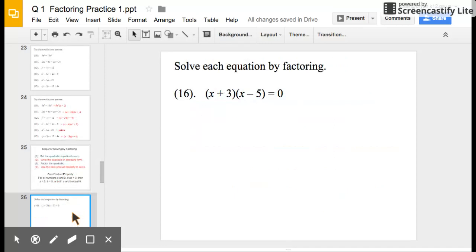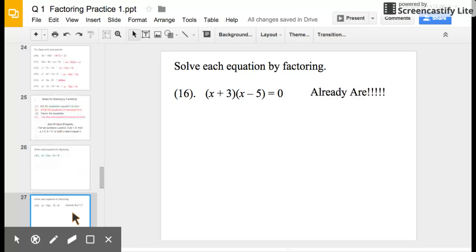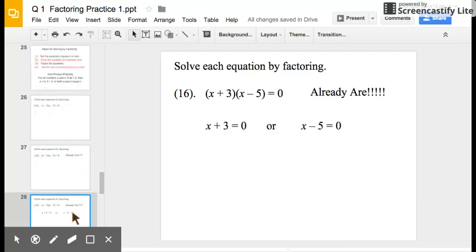So right now, I want to solve each of these equations by factoring. Number 16 says, I have x plus 3 times x minus 5 equals 0. Well, that's already factored. So we're in good shape. So once we have this factored, what we're going to do is we are going to take the parentheses, each factor, which is what's inside the parentheses, and we're going to set both factors equal to 0. So we have x plus 3 equal to 0, and we have x minus 5 equal to 0.